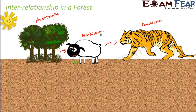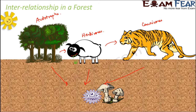This is just one example — it is not that the tiger is the only carnivore; many other carnivores are also present, and similarly many other herbivores are also present. You can see how these animals are depending on each other inside the forest. Now what happens when all of these die — when the plants die, the herbivores die, the carnivores die?